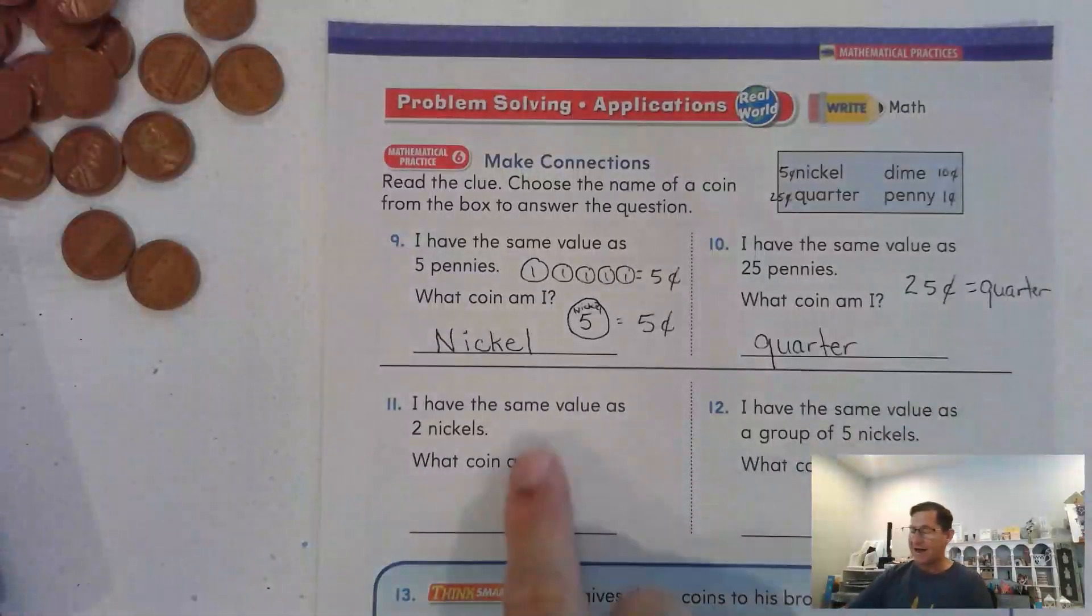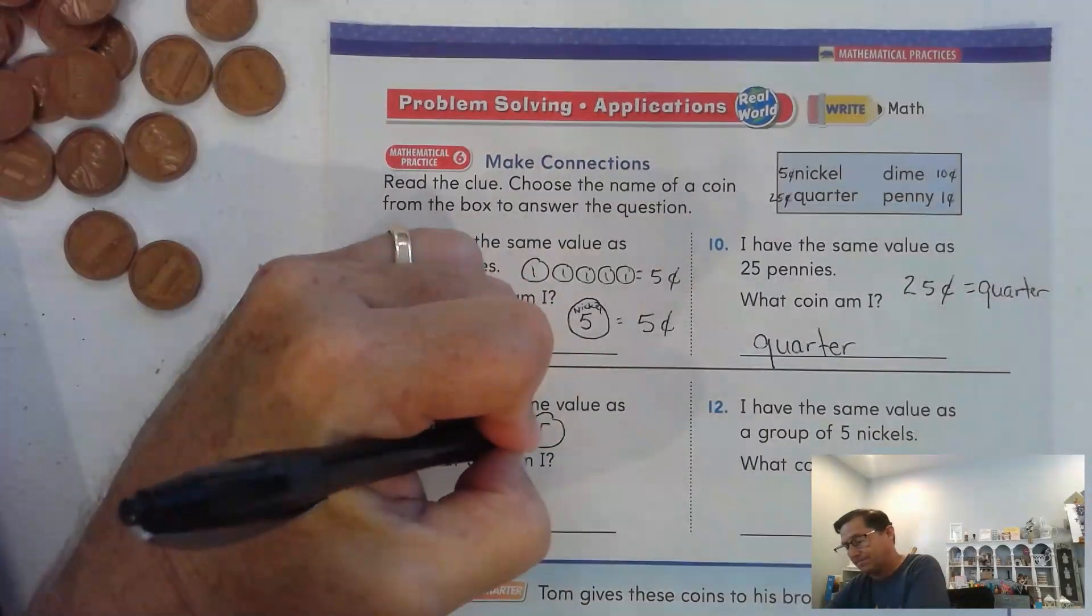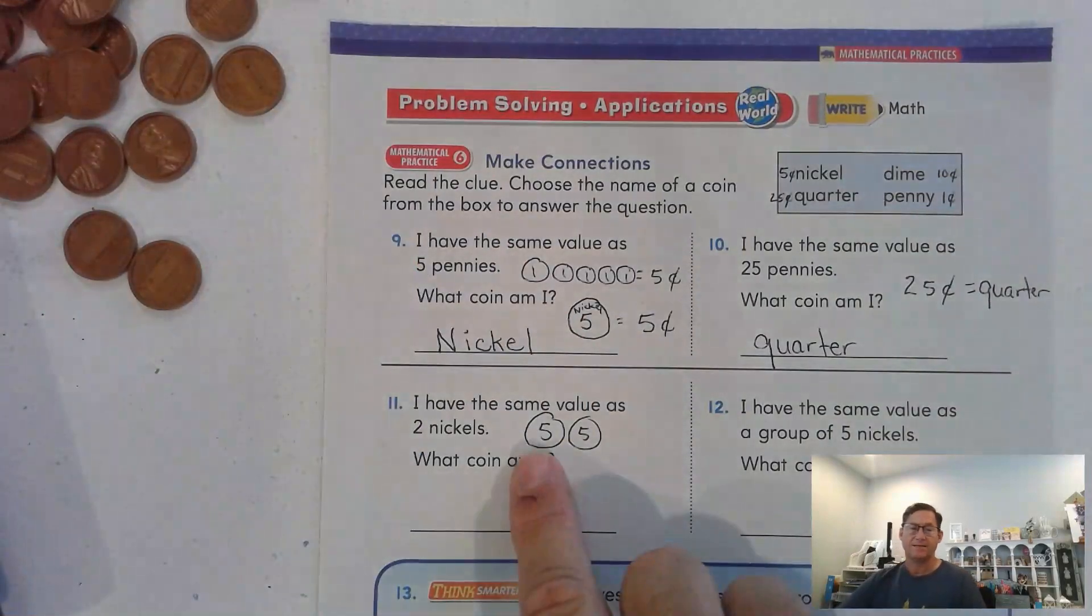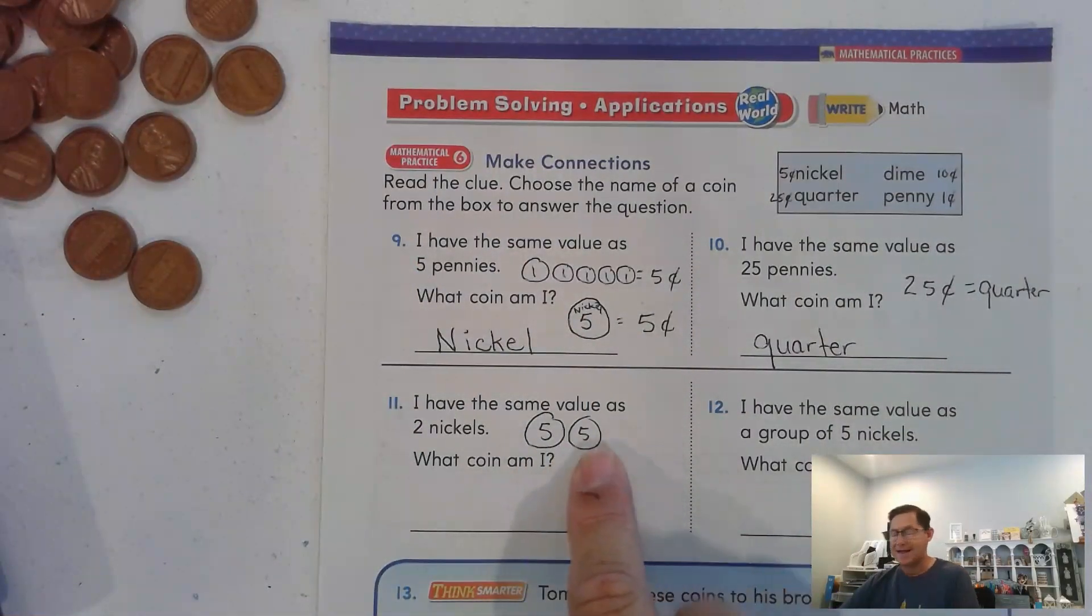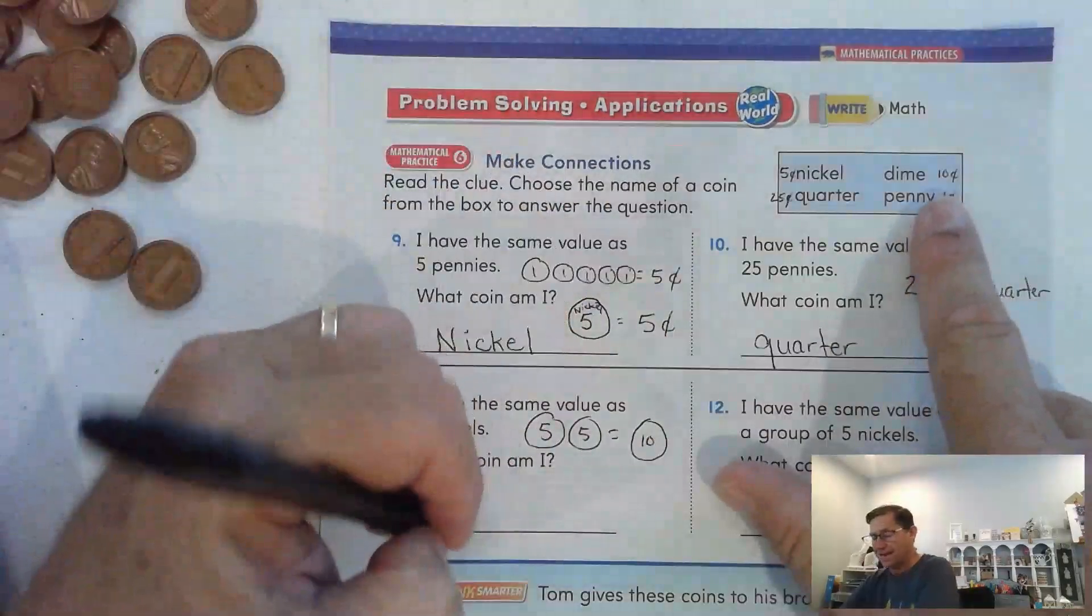I have the same value as two nickels. Each nickel is 5 cents. So 5, 10. So that equals a dime.